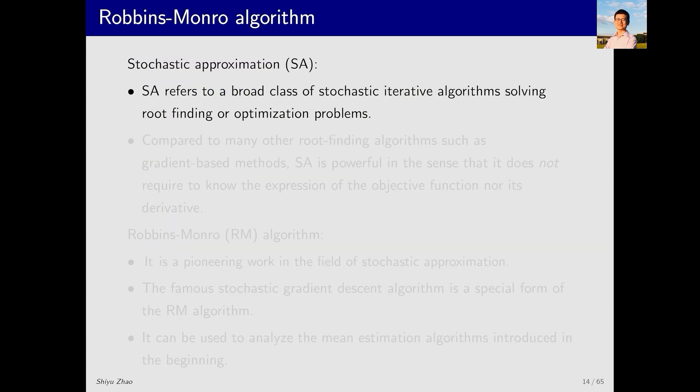We have repeatedly mentioned stochastic approximation so far. What exactly is it? First, it is abbreviated as SA, and refers to a broad class of stochastic iterative algorithms that involve sampling random variables. SA specifically refers to algorithms that solve root-finding or optimization problems.